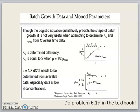Though the logistic equation qualitatively predicts the shape of batch growth, it is not very useful for determining the Ks and mu_max values from X versus time data. Then you have to plot a graph of mu versus S, like the one below here, in order to determine the Ks value. And to determine the mu_max value, you have to plot a graph of ln X over t or X over t.